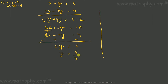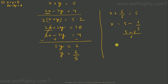10 minus 4 is 6, so y equals 6 over 5. Now putting this y back into x plus y equals 5: x equals 5 minus 6 over 5, which gives x equals negative 1 over 5. So x is negative 1 over 5 and y is 6 over 5. Replacing these values verifies both equations. That's the way we use the elimination method.